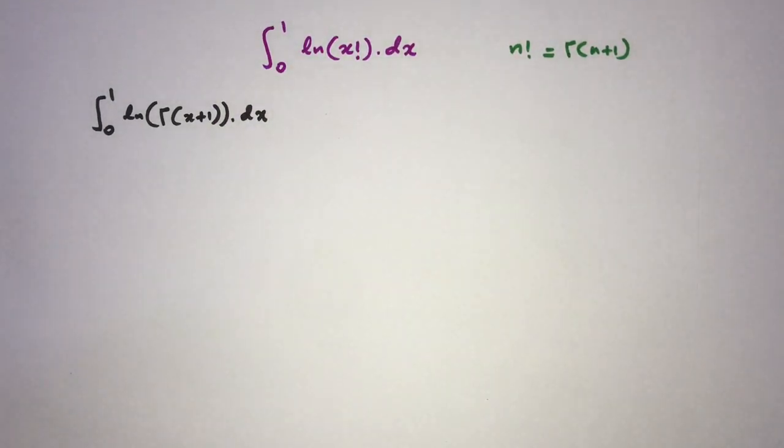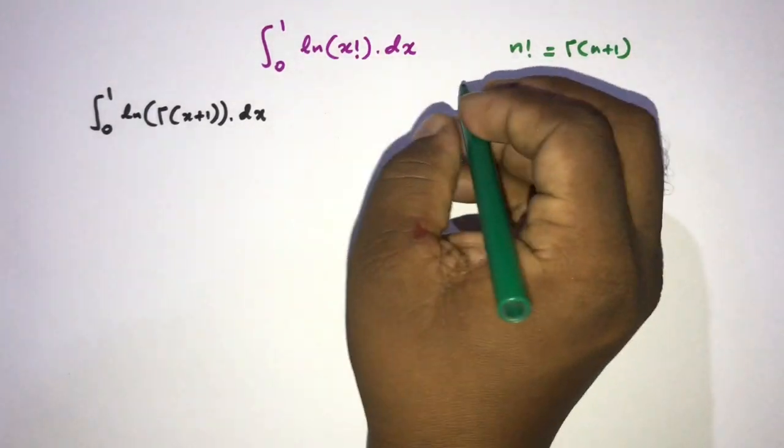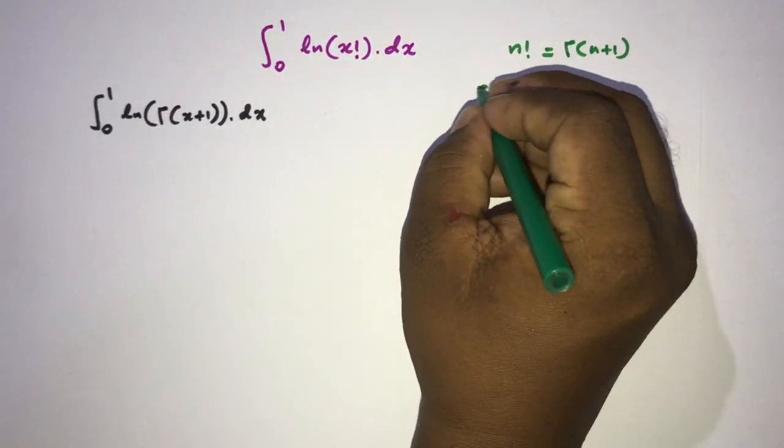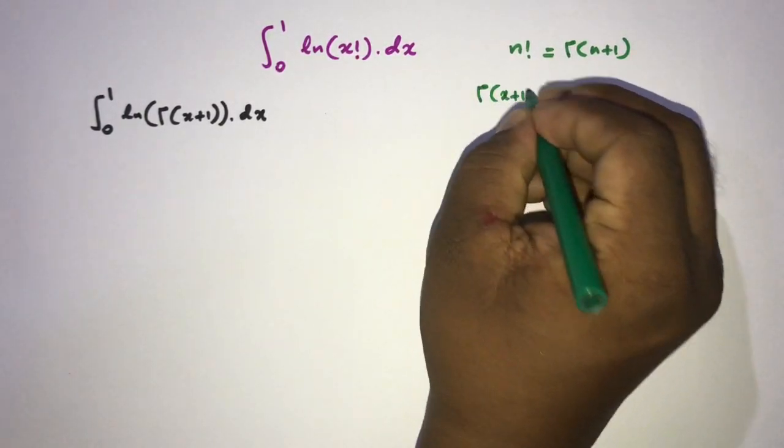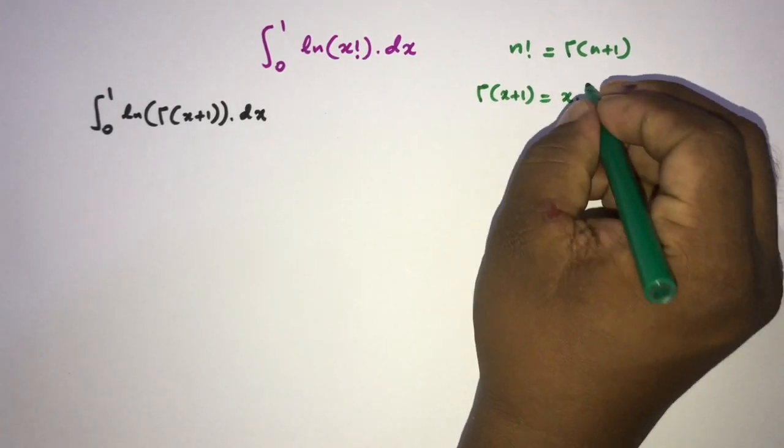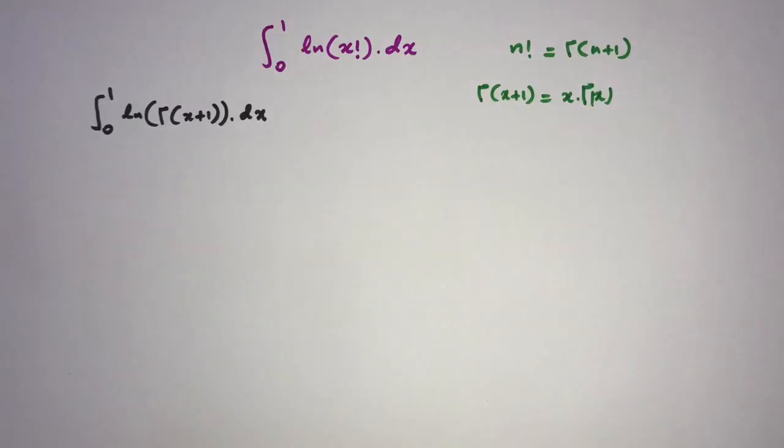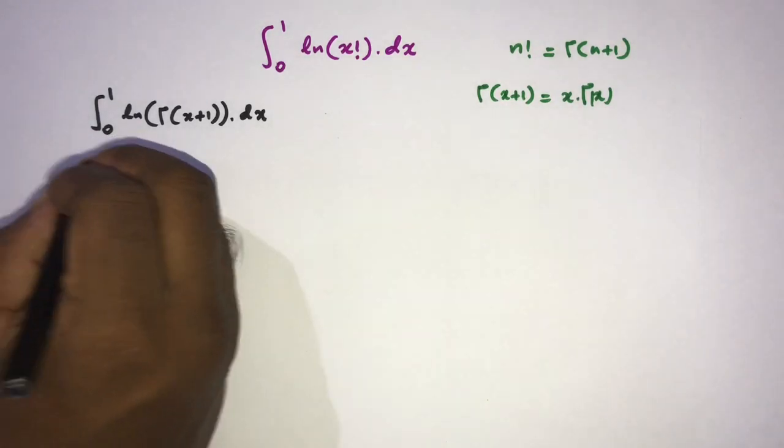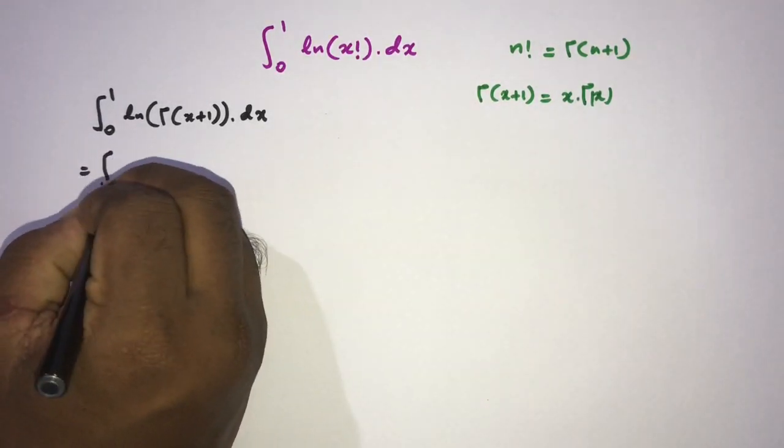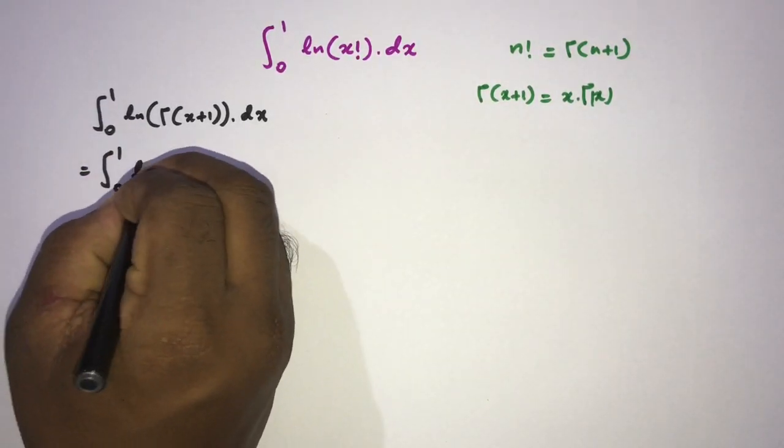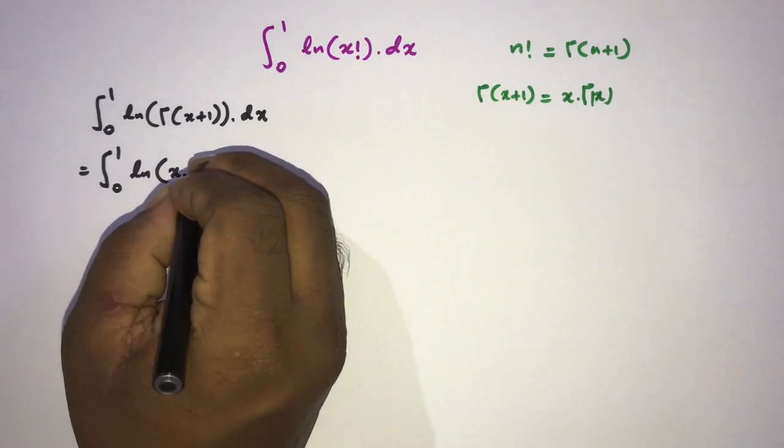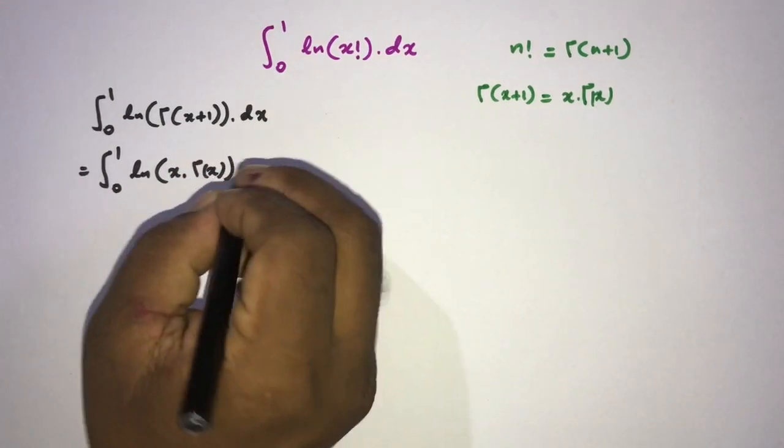Then we know this property of gamma function: gamma of x plus 1 is equal to x times gamma of x. Now we can write this is equal to integral from 0 to 1, natural log of x times gamma of x dx.